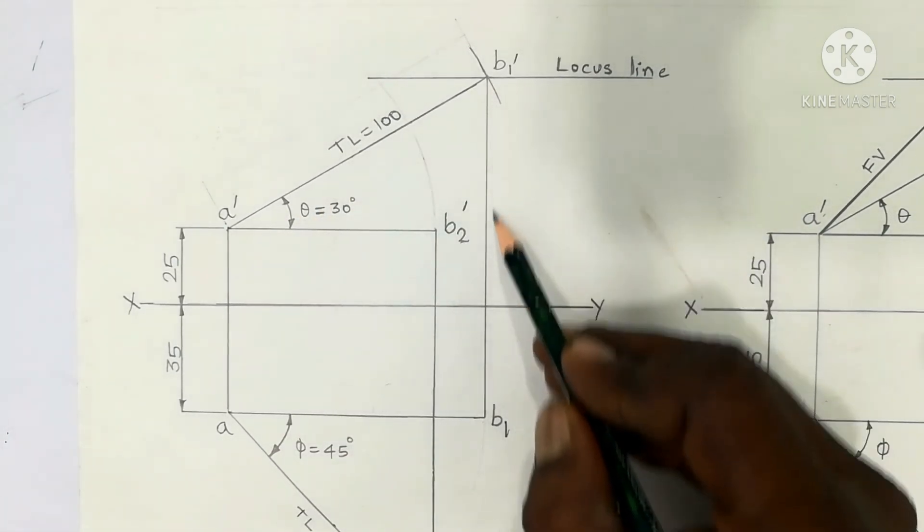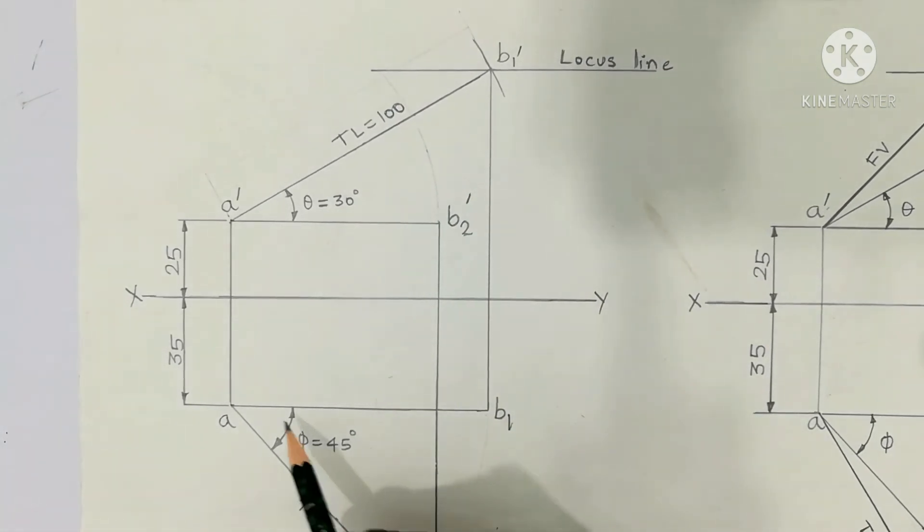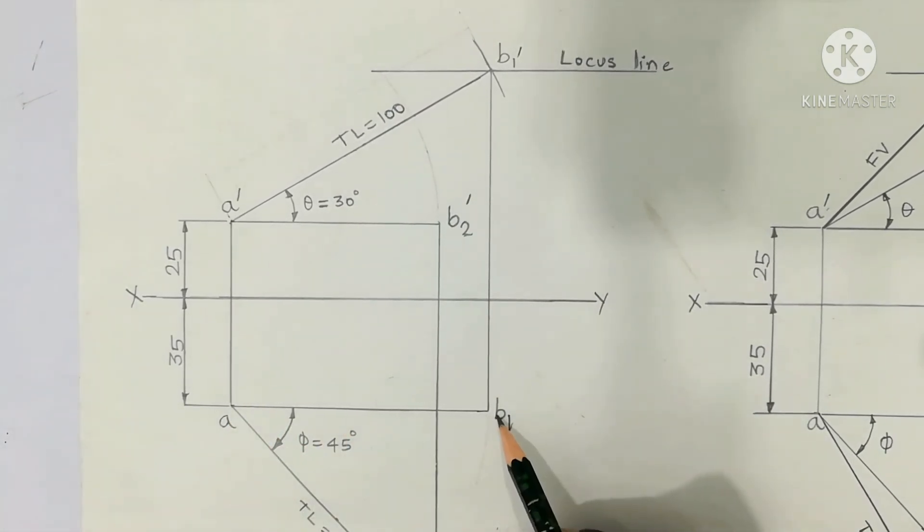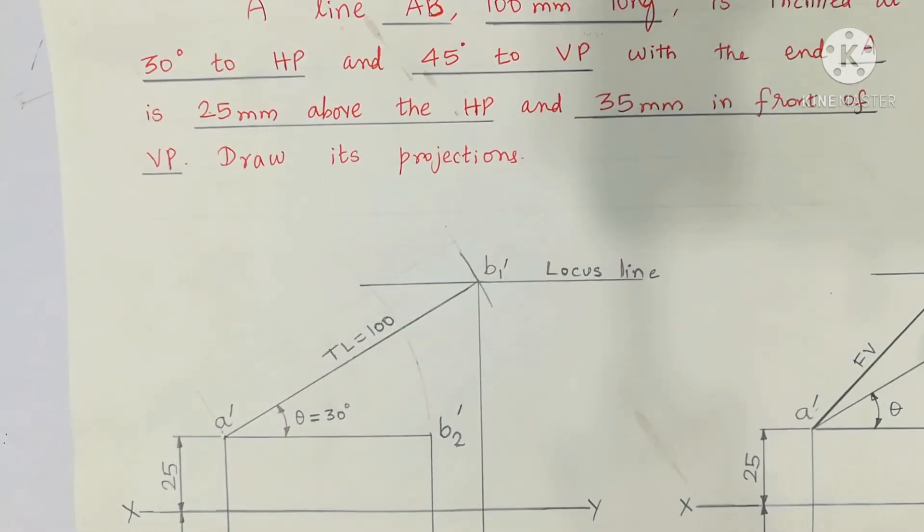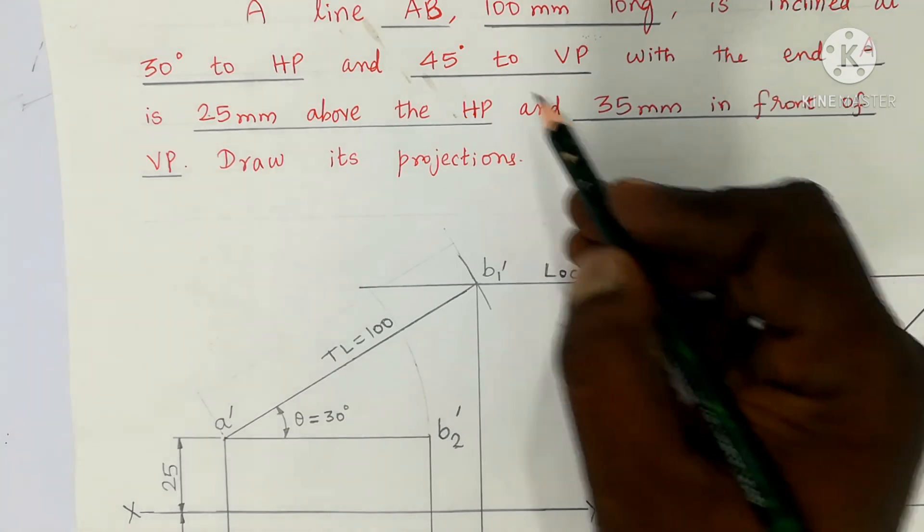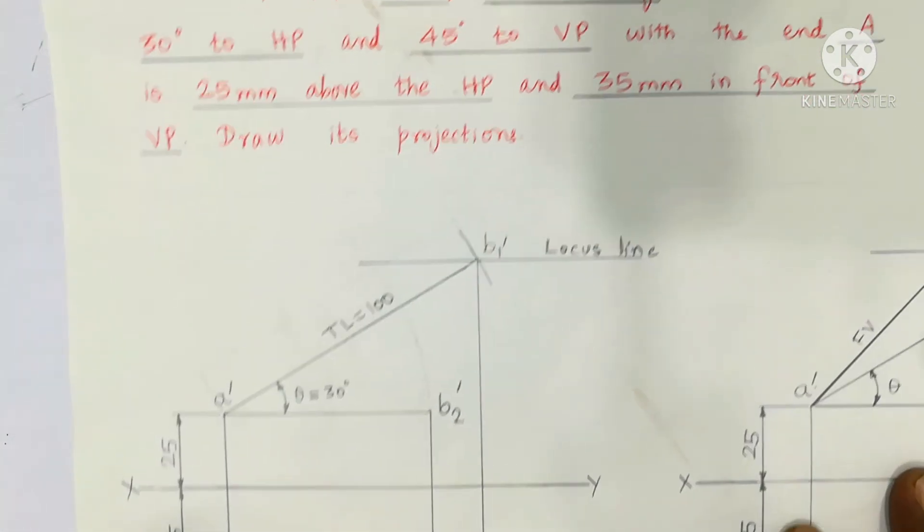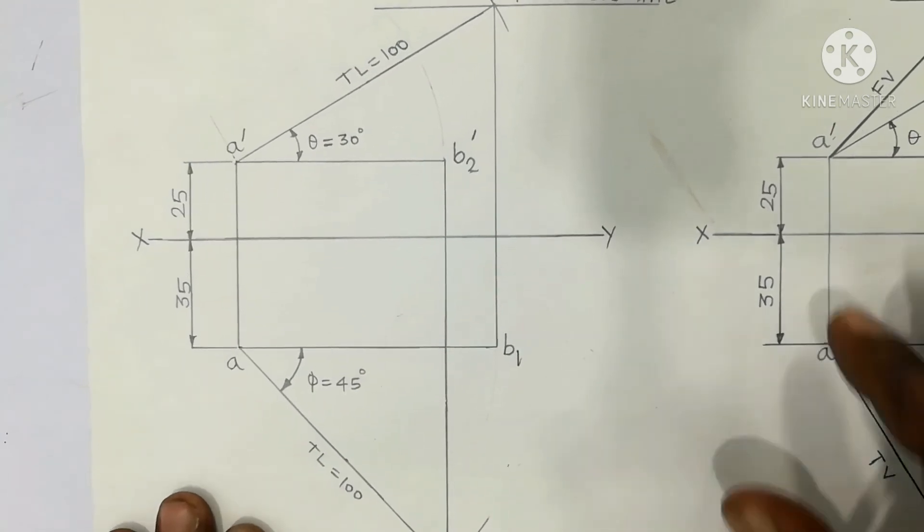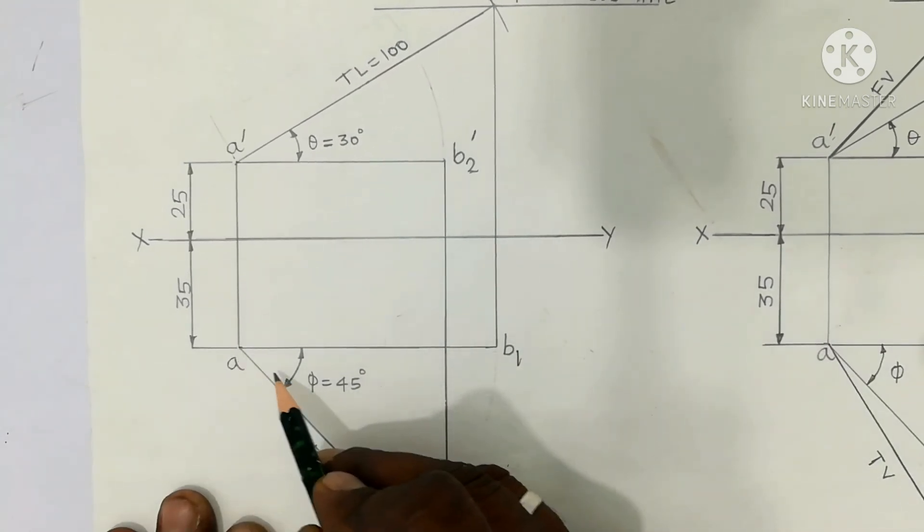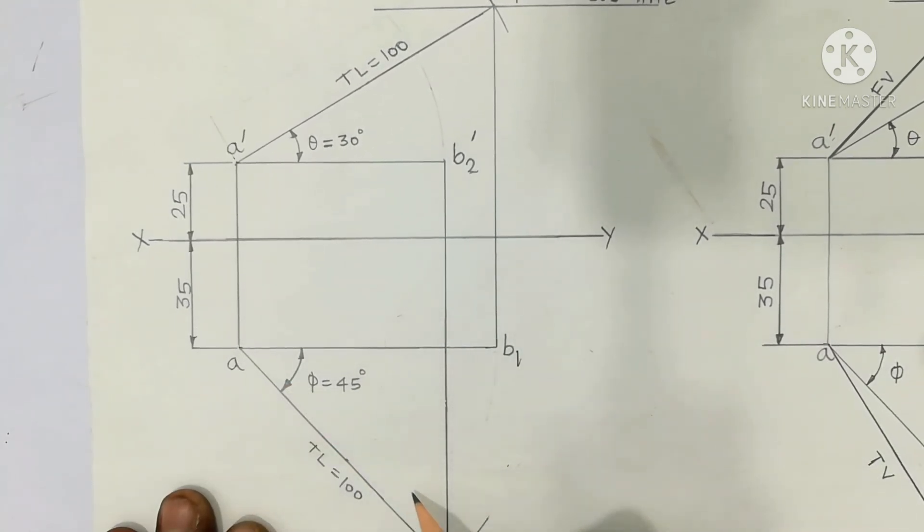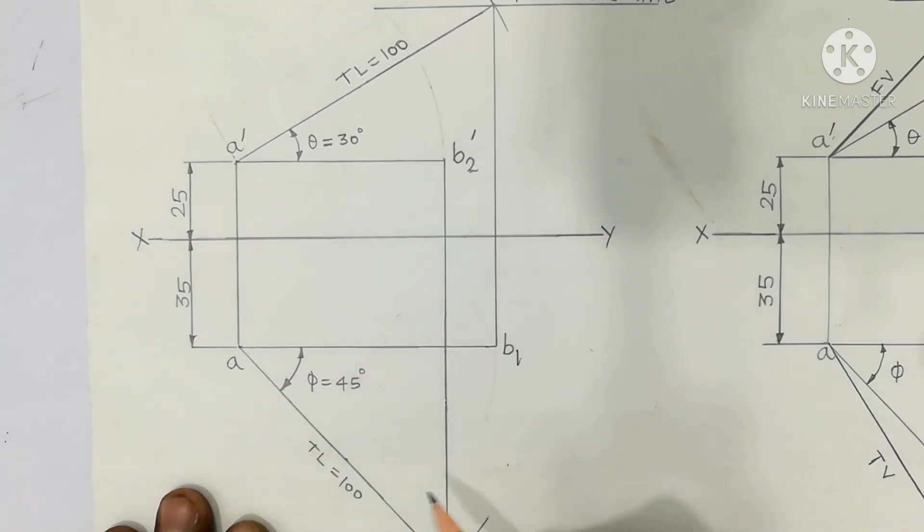True length corresponding top view is AB1. Next VP inclination, go through the question, is 45 degrees. Inclined to VP, the angle inclination will always come below the XY line. So XY line, mark the angle, that is 45 degrees inclined to VP. Next after marking the angles.